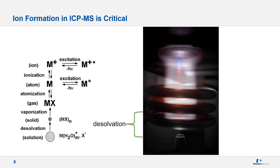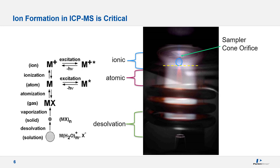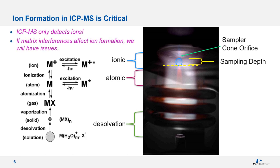The normal analytical zone can be distinguished by regions where atomic and ionic emissions occur. Aspirating a high-concentration yttrium standard, the atomic emission zone appears as a red region, while in ICP-MS we focus on the ionic emission zone shown by blue emission. The dashed yellow line shows the top of the quartz ICP torch and the green arrow shows the sampler cone orifice. The distance between the sampler orifice and the torch is called the sampling depth. In ICP-MS we detect only the ions formed in the plasma, so if a matrix interference affects ion formation, we will have issues with our results.